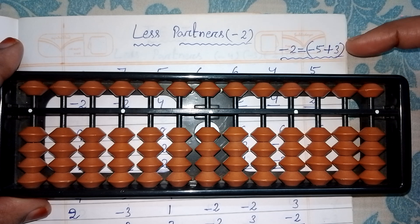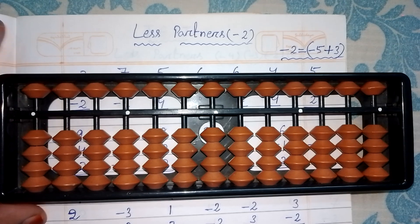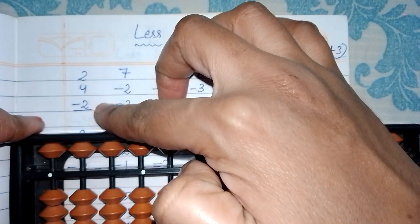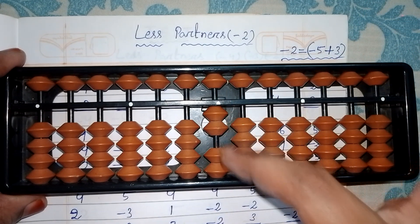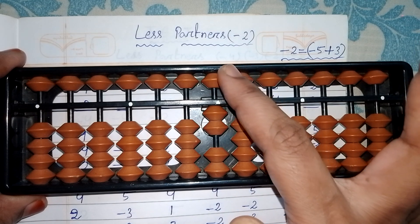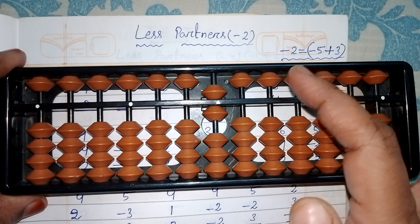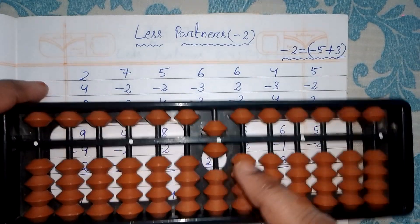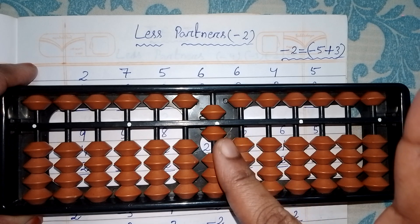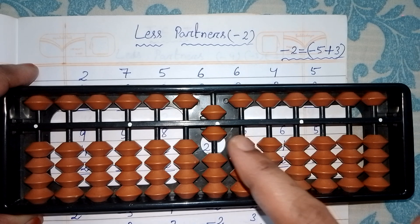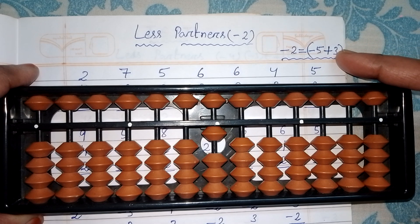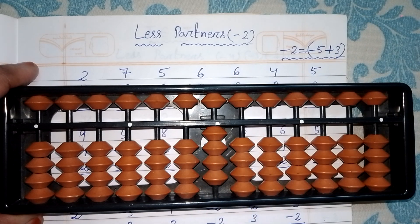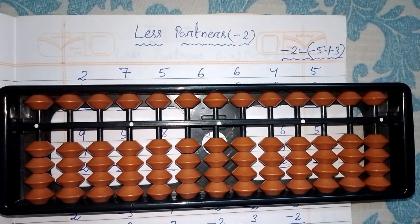The rules for less two: first step is less five — remove five. Second step is add three. For example, in the question 2+4-2, after adding two and four, when we need to subtract two but don't have two bits, we use less partner less two: push up five and add three. That gives the answer.